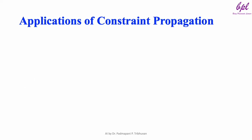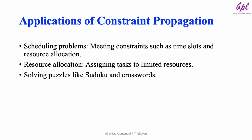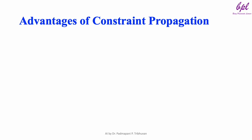Applications of Constraint Propagation: Constraint Propagation is widely used in real-world applications such as scheduling and resource allocation. In puzzles like Sudoku and crosswords, Constraint Propagation helps to prune possibilities and allows us to solve problems faster. It is also a key technique in AI planning systems where multiple constraints must be considered to generate a feasible plan.